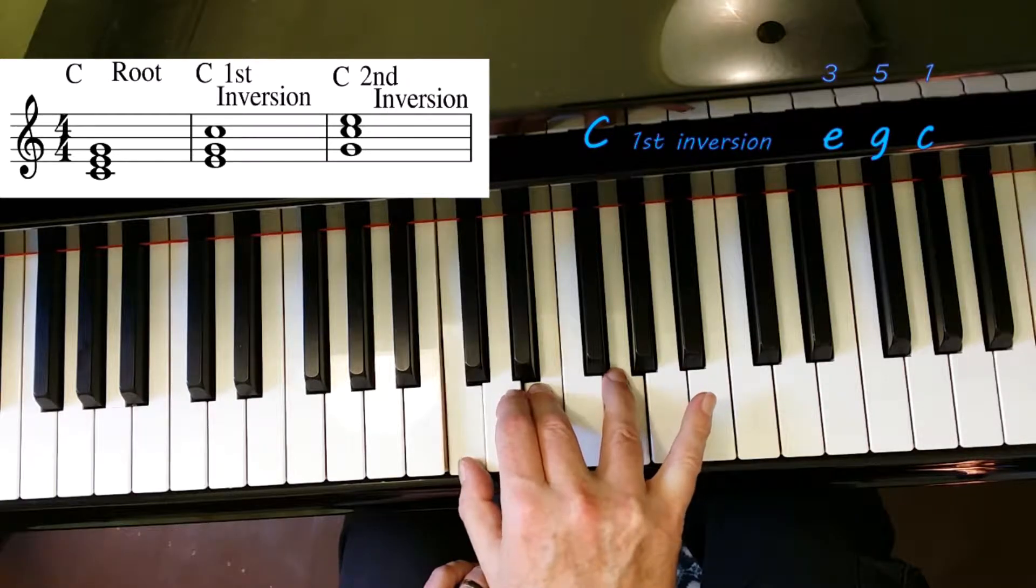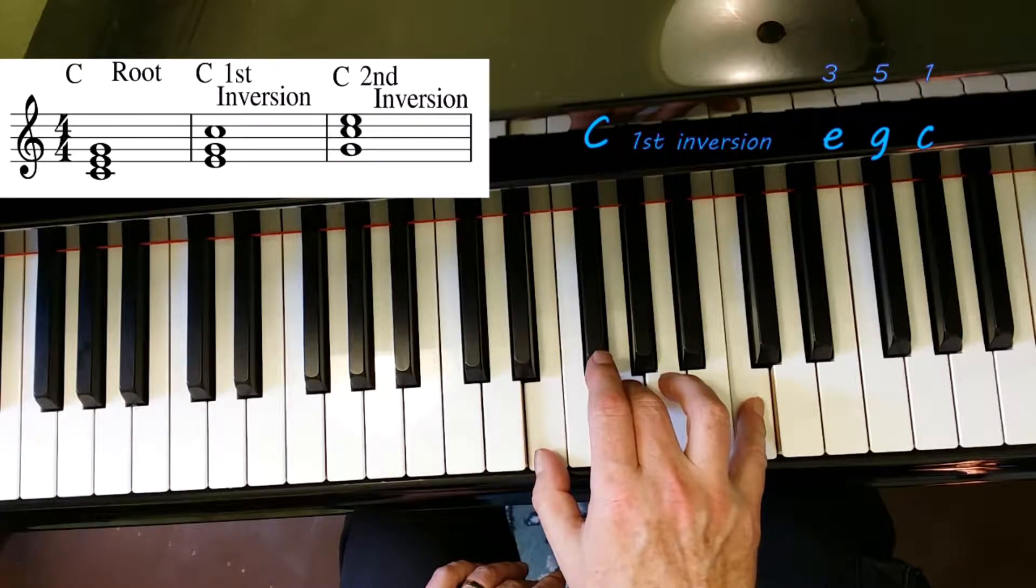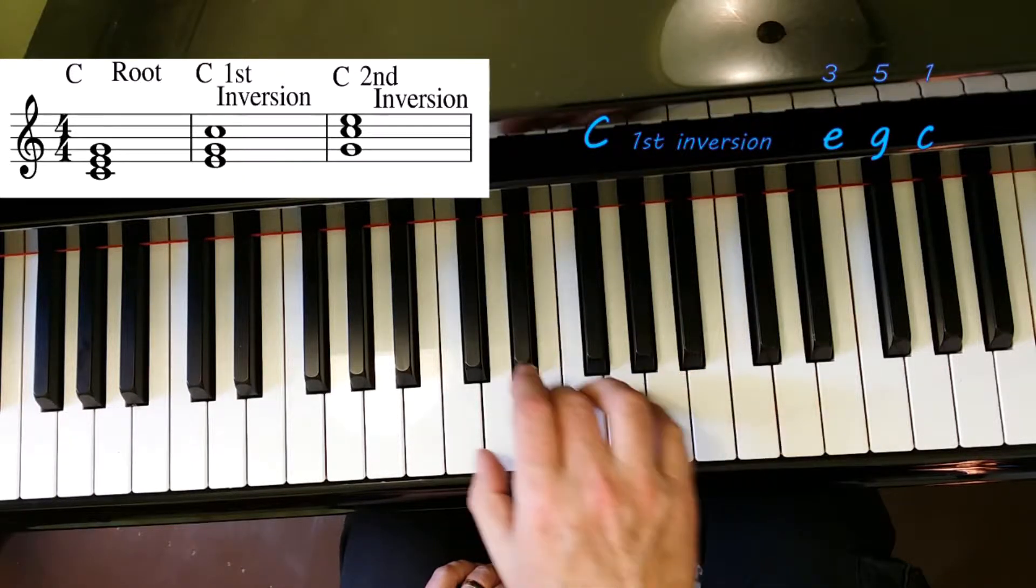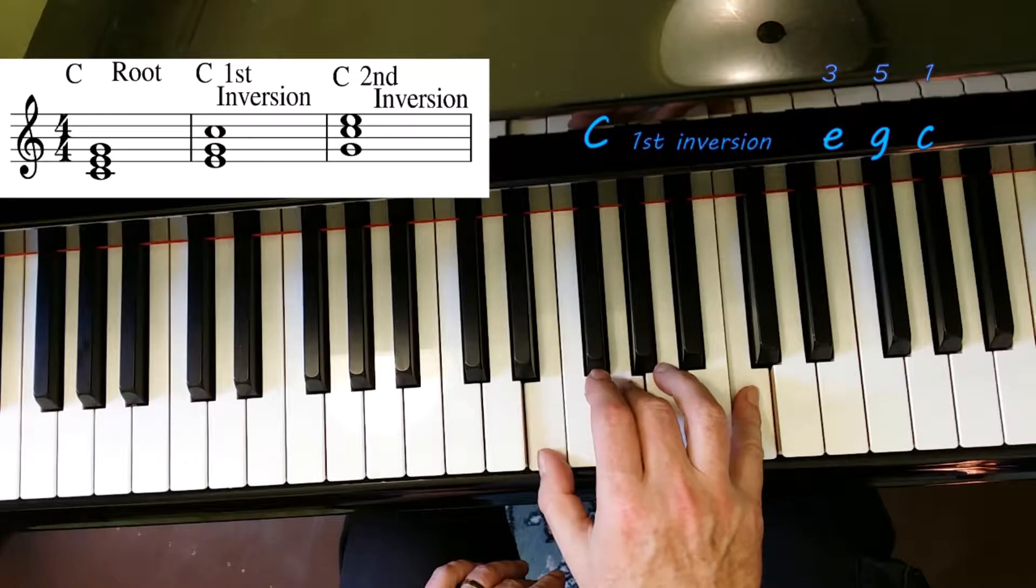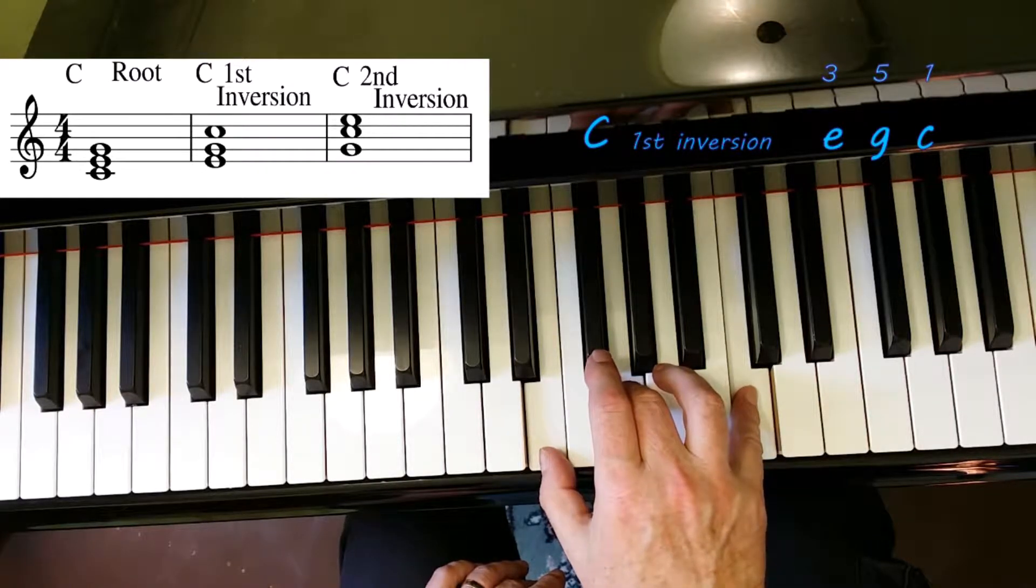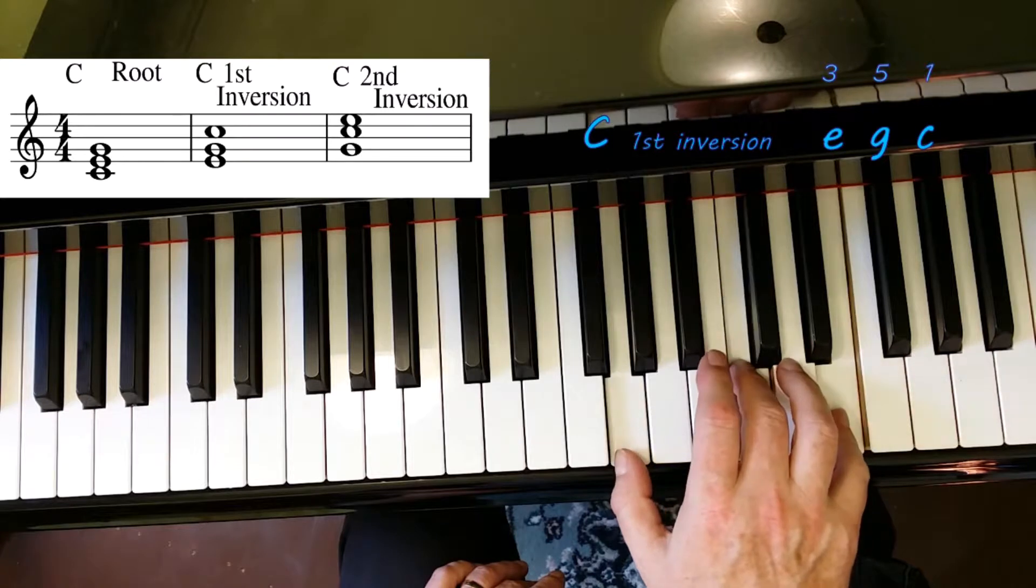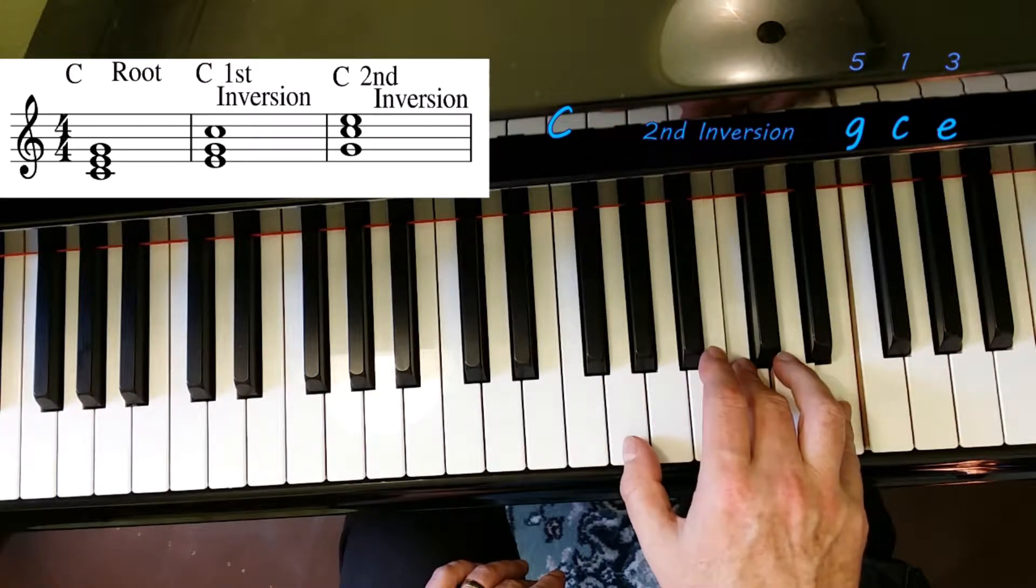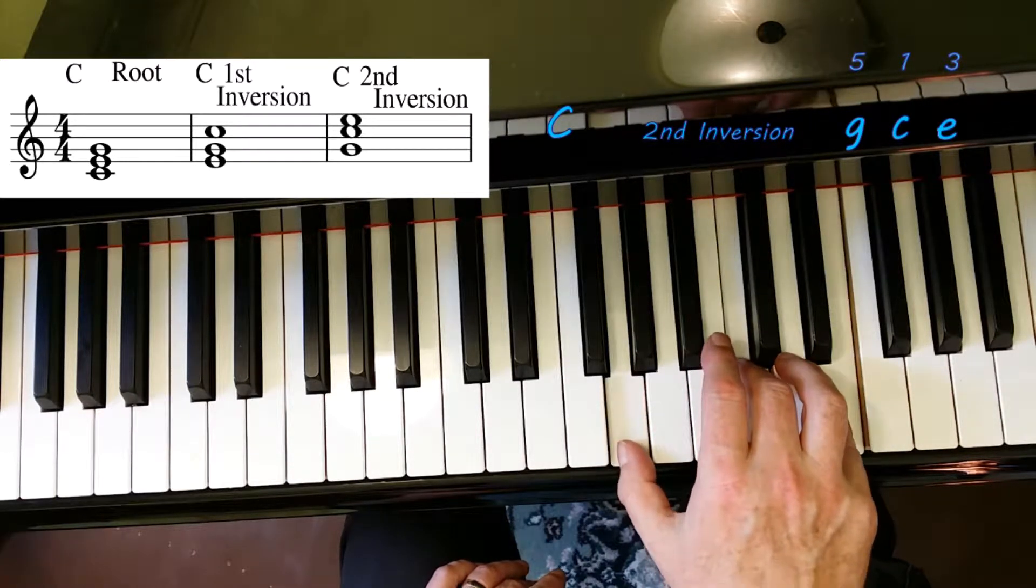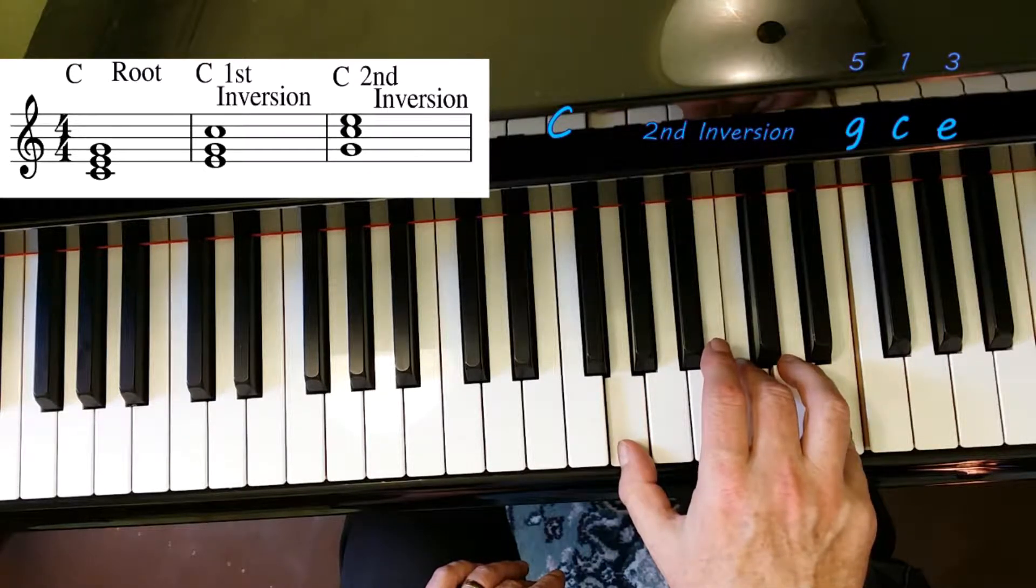We can actually take this C here and put it up here. This is another inversion called first inversion. This one is root position, this one is first inversion—still C, E, G. We do that once more: take the bottom note and put it on the top again, and we have second inversion. Note that it's still one, three, five, or C, E, G.